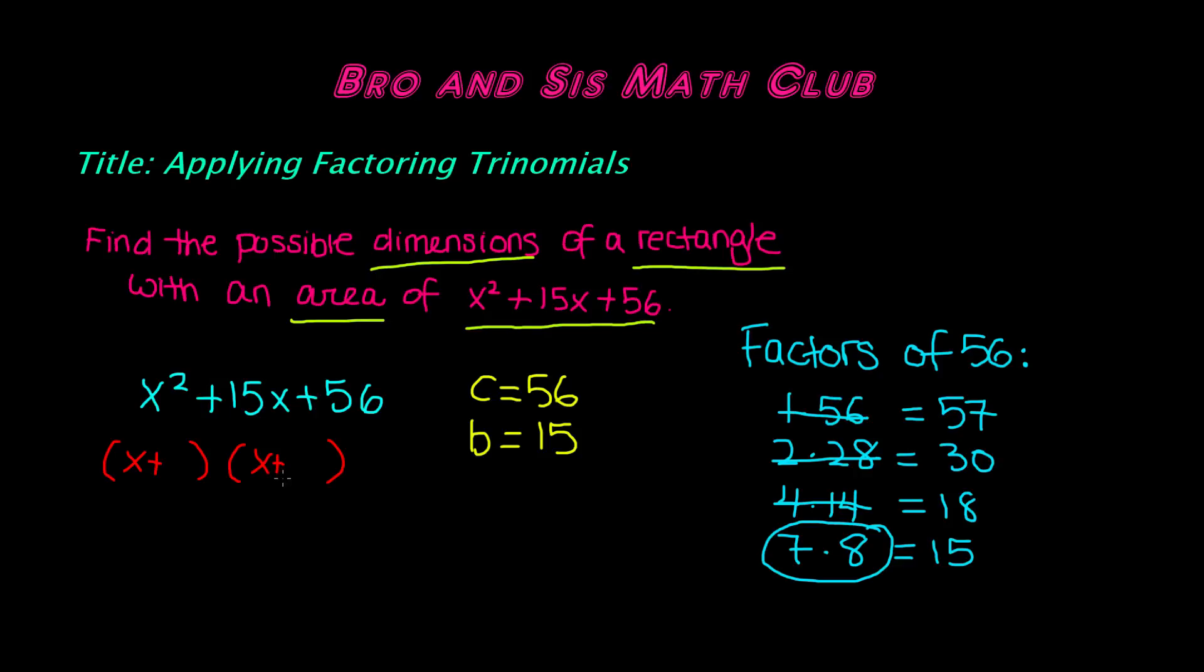So remember, whenever your b term and c term are positive, your binomials are both going to have plus signs. So we found the factor pairs 7 and 8, so it doesn't really matter where we put them, so we can put 7 here and 8 here. Same thing if you put 8 here and then 7 there.